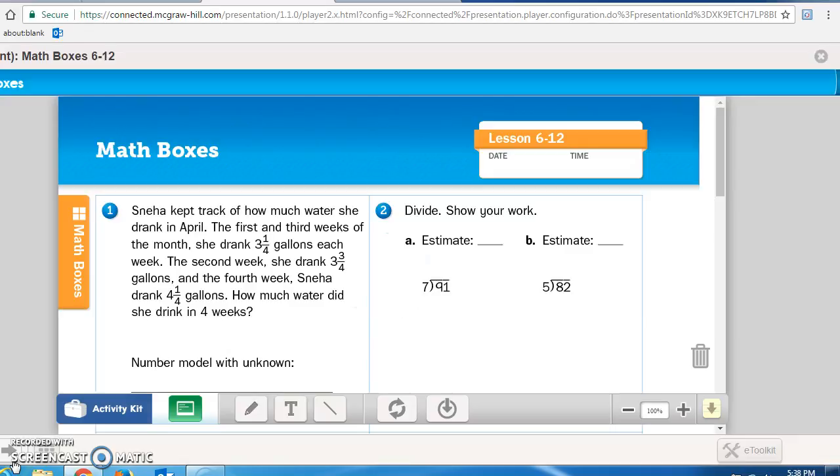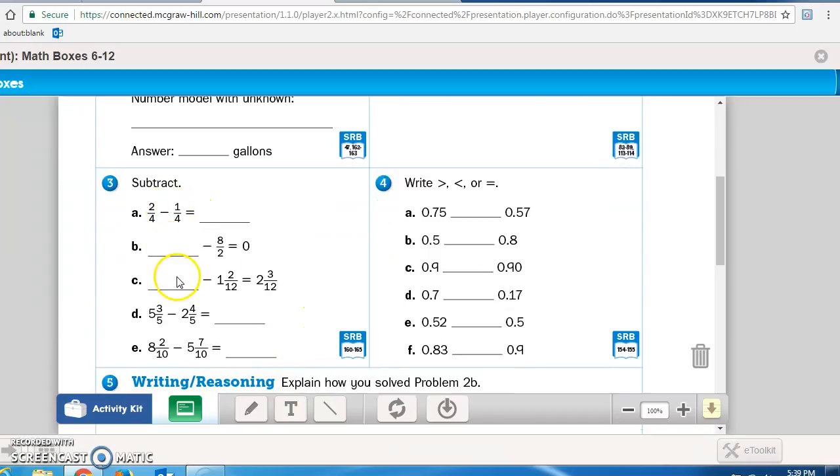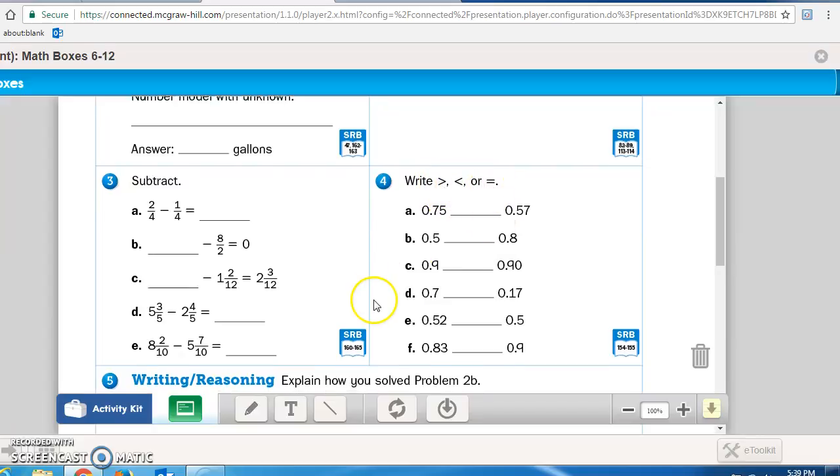Pause the recording now and do Math Box 1. You can finish the entire page 222 if you don't need it read to you. Math Box 2 just says divide, show your work. First, look at the problem and estimate what your answer you think might be and then actually divide it and compare it. Number two, you're subtracting fractions. For this one, you simply subtract. For this one, don't forget, you have to have a number that when you take away 8/2, you have zero as an answer. For number four, you're just filling it in with greater than, less than, or equal to signs. And for five, it wants you to explain how you solve problem 2B. Pause the recording now. Finish this Math Journal page 222. Check it in the answer key and then come to me if you have any difficulties.